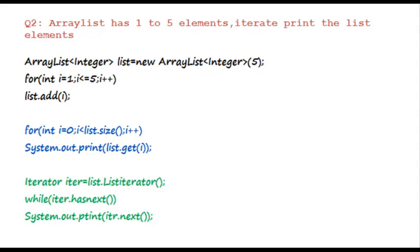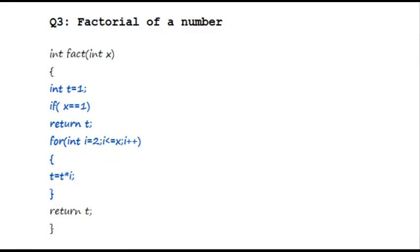The next question is: given an ArrayList with 1 to 5 elements, we need to iterate the list. Use two approaches — one is using a list iterator and the other is a for loop with the get method. The next question is the factorial of a number.